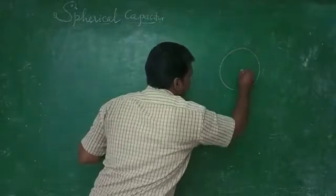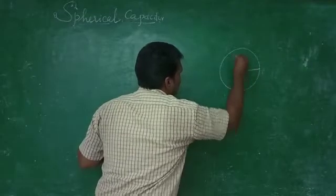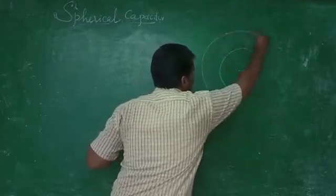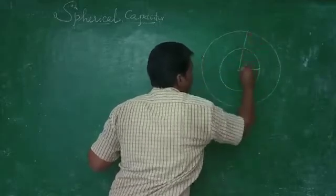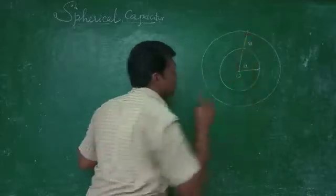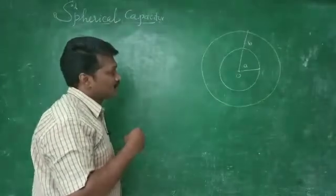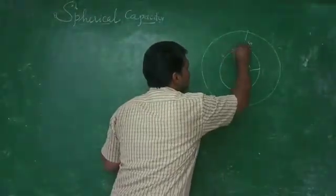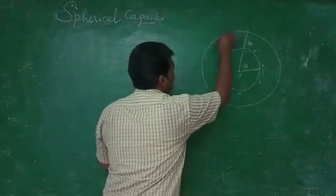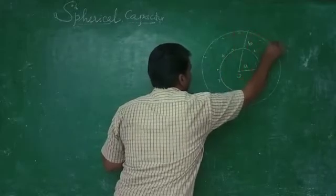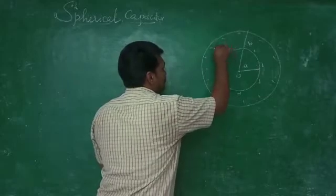This is the inner sphere which has radius A. These two spheres are concentric spheres because both centers are the same. The inner sphere is positive and the outer sphere has negative charge on its inner side. The field lines go from positive to negative.